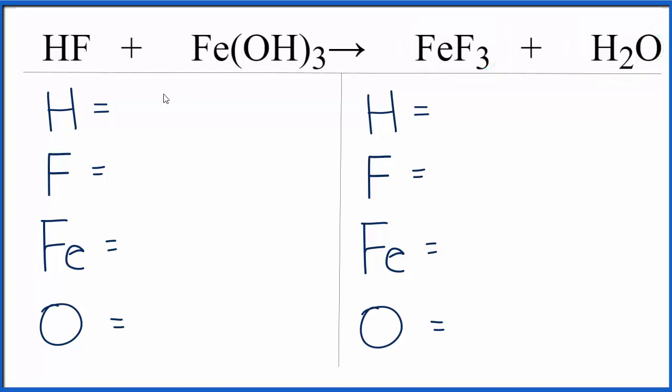Let's add the atoms up on both sides of the equation. We have one hydrogen here, and then we have three times this whole thing, so we have three times the one hydrogen there. That will give us four total hydrogens. Fluorines, we have one, iron, we have one, and this three again applies to everything, so three times the one oxygen, three oxygen atoms.